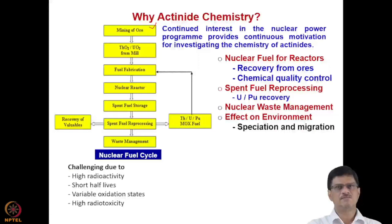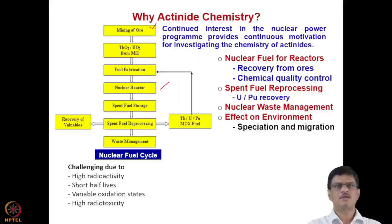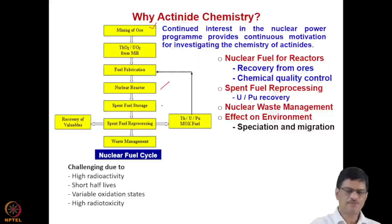These elements and their oxides — thorium oxide and uranium oxide — proceed to fuel fabrication. In some cases, if enriched uranium is needed, enrichment is an additional step before fuel fabrication. After fuel fabrication, the material goes to the nuclear reactor. After the reactor is operated for a certain period, the spent fuel — where the fissile content has depleted significantly — is removed from the reactor core and kept in spent fuel storage, where the radioactivity decreases over time.